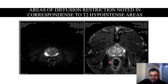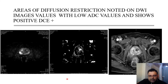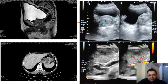On T2 weighted axial imaging, a T2 hypointense signal showed corresponding areas of diffusion restriction on DWI images. The T2 hypointense area showed diffusion restriction with low ADC value and positive uptake of contrast on dynamic contrast imaging. This lesion was categorized as PI-RADS 5 and on histopathological examination proved to be adenocarcinoma. The PSA of this patient was more than 100 and the patient also had skeletal metastasis. The patient had enlargement of the prostate with obstructive uropathy symptoms and T2 sagittal images also showed mucosal irregularities involving the urinary bladder.